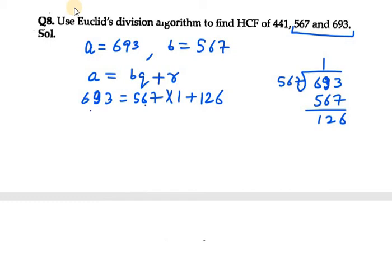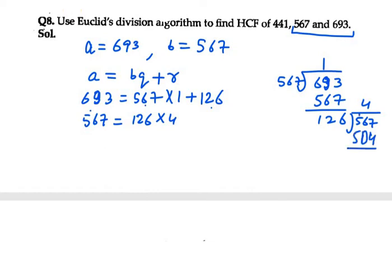Now we convert B into A and R into B, so A becomes 567 and B becomes 126. So 126 into 4 gives us 504, and 567 minus 504 is 63. So 567 equals 126 into 4 plus remainder 63.